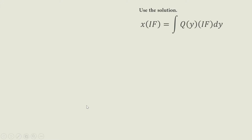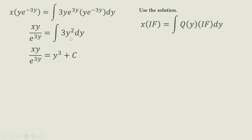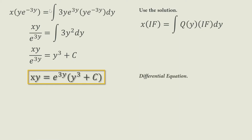For the next step, we use the solution by multiplying both sides by the integrating factor. So X times the IF (Y times e^(−3Y)) equals the integral of Q(Y) times IF times DY. Simplifying the terms under the integral sign gives 3Y² DY. Integrating gives Y³ plus C. The final result is XY equals e^(3Y) times the quantity (Y³ plus C).